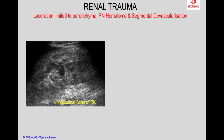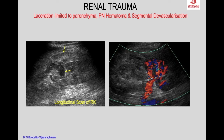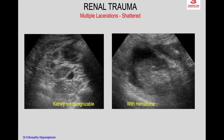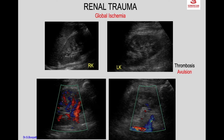Here again you see the laceration and the perinephric hematoma, but when you put on color Doppler you see the upper half of the kidney does not show any flow. This is due to segmental devascularization — a shattered kidney — where you fail to appreciate the renal outline, indicating avulsion or thrombosis of the main renal artery.